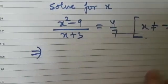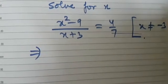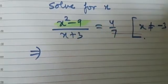Now you see that in the numerator on the left hand side we have x squared minus 9. This is an algebraic expression.